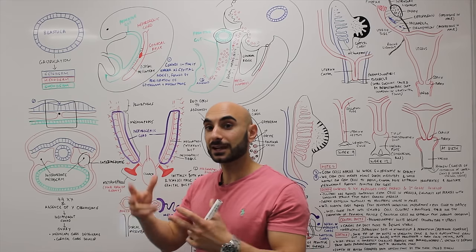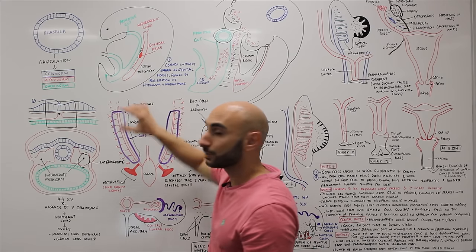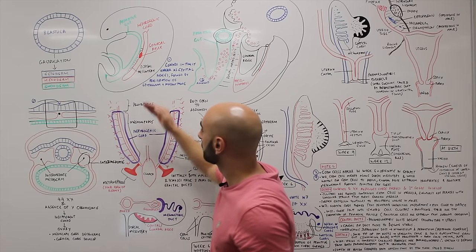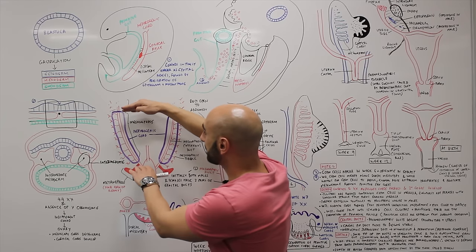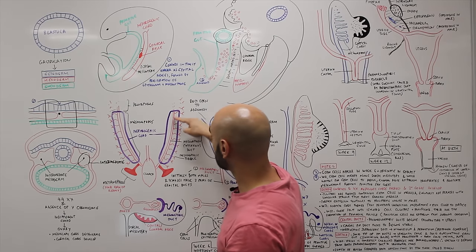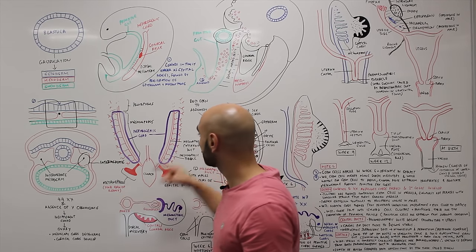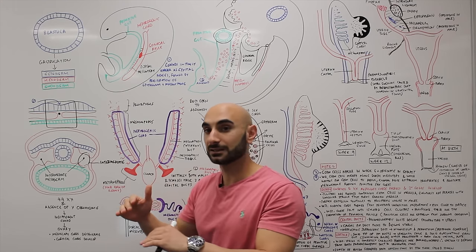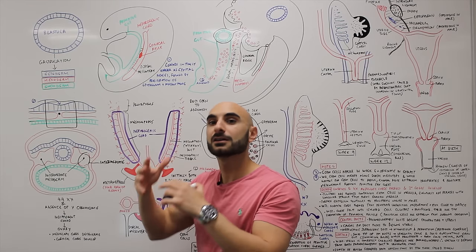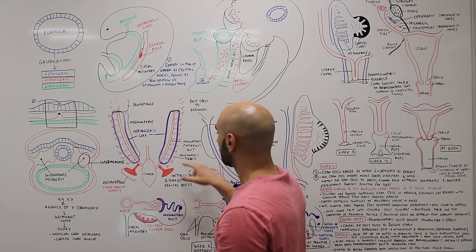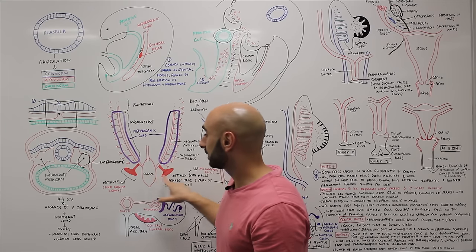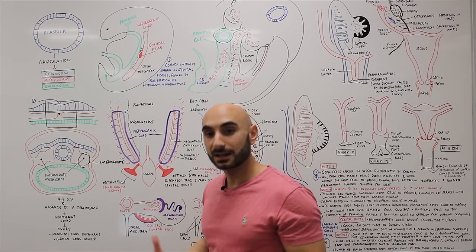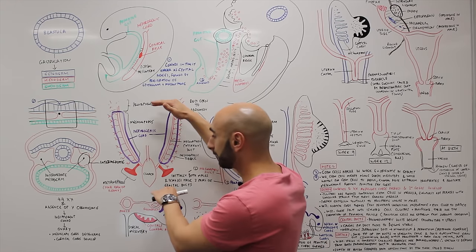The three stages of development of this mesoderm are: the pronephros, which is a rudimentary structure — your initial kidneys — and by week 4 they're gone. Then we have the mesonephros, which contains the mesonephric duct, otherwise known as the Wolffian duct, and the mesonephric tubule, or Wolffian tubule. These are the middle stage of kidney development and will contribute to becoming the female reproductive system. Finally, we have the metanephros — the final form of the kidney — which remains into adulthood.